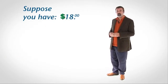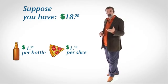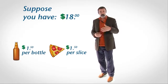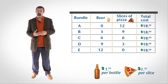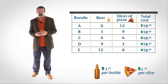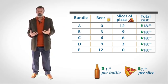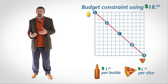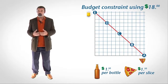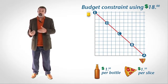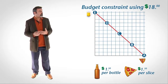Suppose you have $18 to spend. The price of beer is $1.50 per bottle and the price of pizza is $1.50 per slice. With $18 you are capable of purchasing any number of combinations of pizza and beer. The table here shows five possible combinations of beer and pizza you could purchase. We can plot these bundles on a graph. The line is the budget constraint you face when you have $18 to spend and when beer and pizza each cost $1.50 per unit.